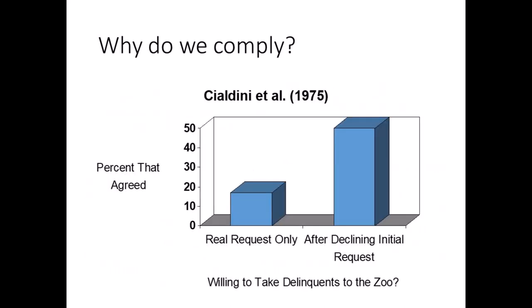Cialdini and colleagues asked college students if they would supervise a group of juvenile delinquents on a field trip to the zoo. Only 17% agreed. Then they asked a second group if they would volunteer two hours per week, without pay, at a counseling center for juvenile delinquents for two years. Everyone declined, at which point the experimenter followed up with the more modest request to supervise the zoo trip. A whopping 50% said yes, and most participants did in fact show up to supervise, just as they had promised.